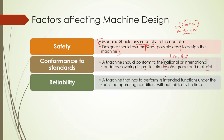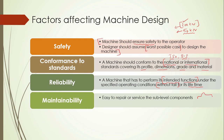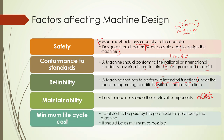Next is reliability — the intended function, whatever function or mission, should be maintained throughout the lifetime. It should not fail — that is reliability. Next is maintenance — for example, sub-level components. For example, in a car, sub-assemblies such as the engine and gearbox — these sub-assemblies can be repaired. That is called maintenance.